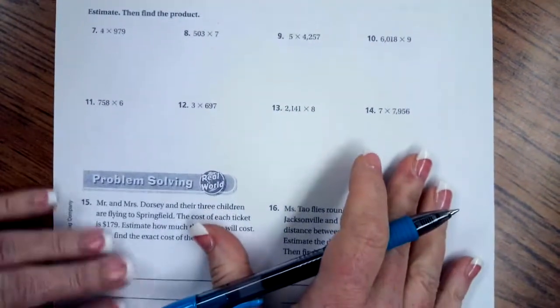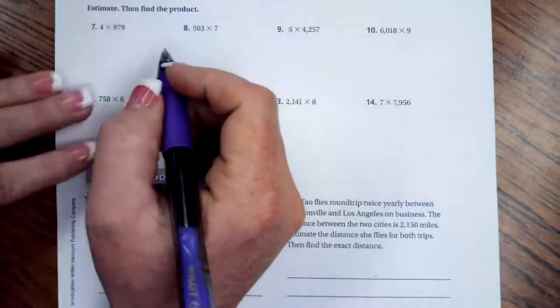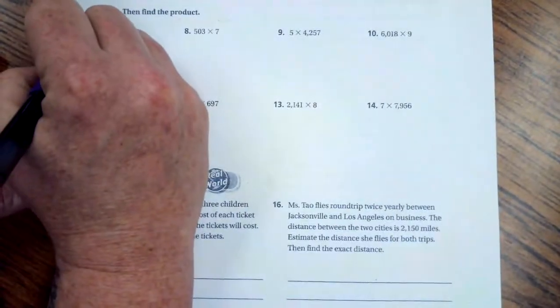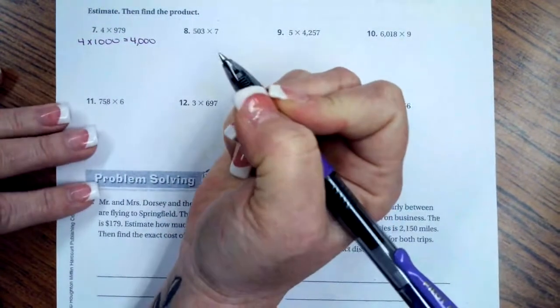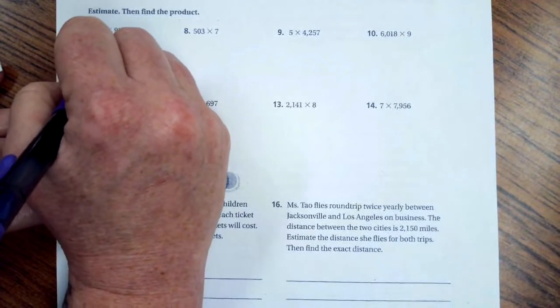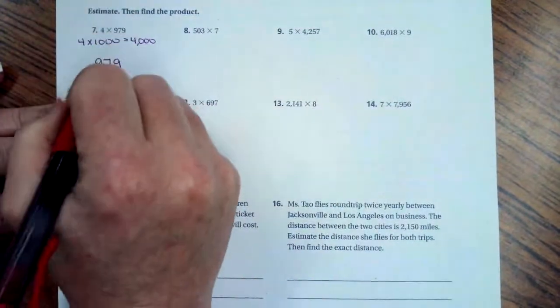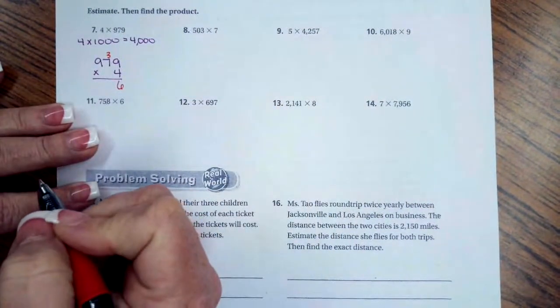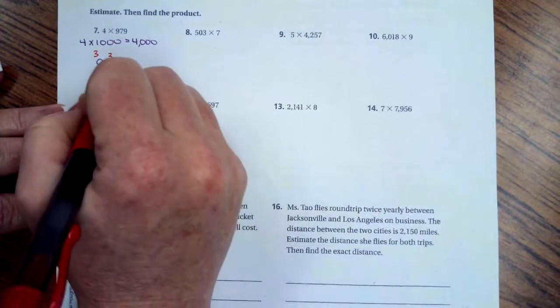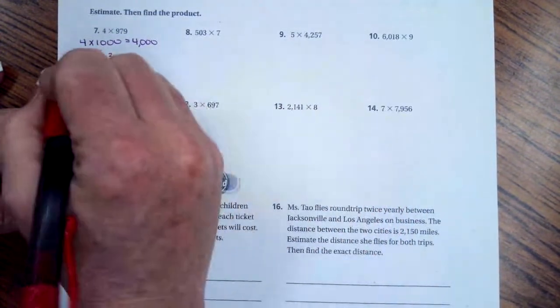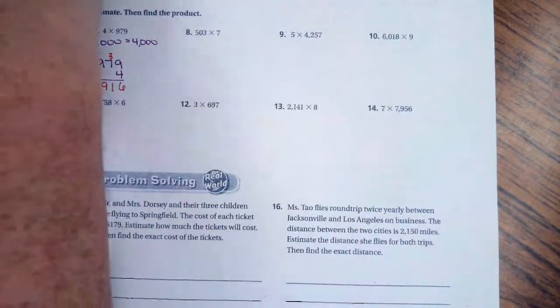We're going to go down and do number seven. Number seven estimate would be four times one thousand, that would be about four thousand. Then if I did the real math, I'm going to line up nine hundred seventy-nine times four. Four times nine is thirty-six, I'm going to carry my three. Four times seven is twenty-eight plus three is thirty-one, I'm going to carry my three again. And then four times nine is thirty-six again plus three is thirty-nine. There's our actual math.